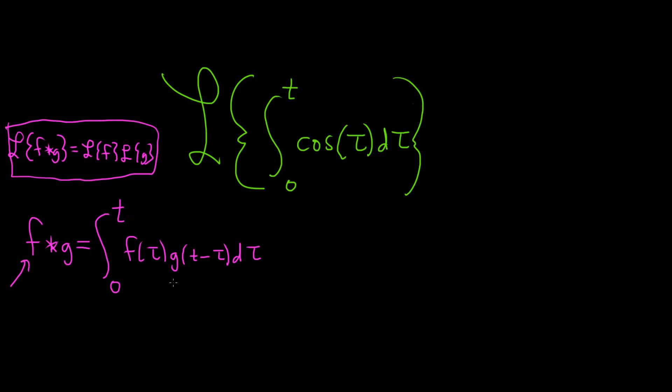This is called the convolution theorem. So whenever you have something that looks like this, you can just take the Laplace of it and multiply the functions. That makes it extremely powerful if you can write things in this way.